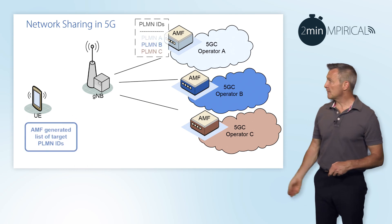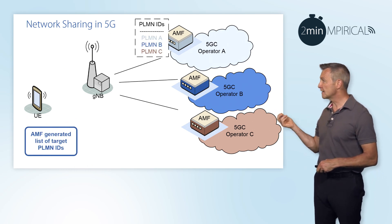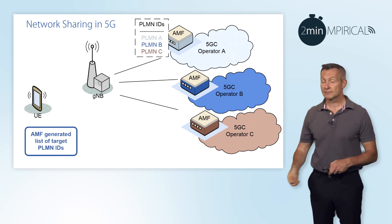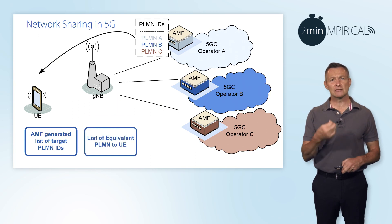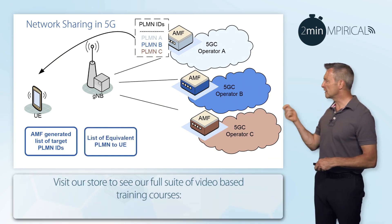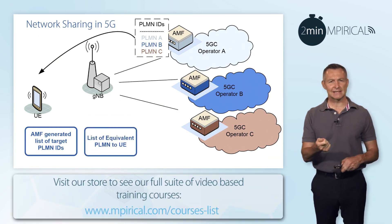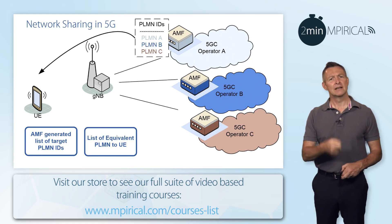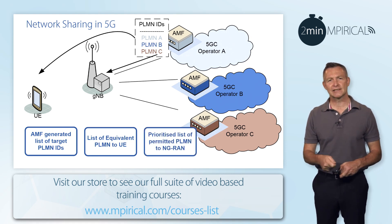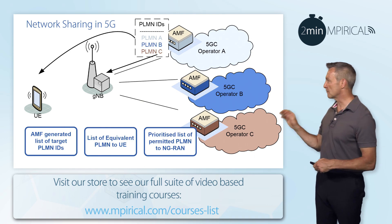The PLMN identity list will be generated by the AMF and that will be passed to the devices in the form of the equivalent PLMN identity list. We'll also see a prioritised list being passed to the gNBs as well.